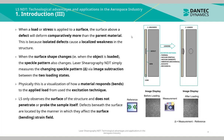When a load or stress is applied to a surface, the surface above a defect will deform comparatively more than the parent material, because isolated defects cause a localized weakness in the structure. Assuming an unloaded state of a sandwiched core material where a defect is present directly beneath the skin, when the sample is loaded, the cross-section will deflect comparatively more where the defect is present compared to the parent material.